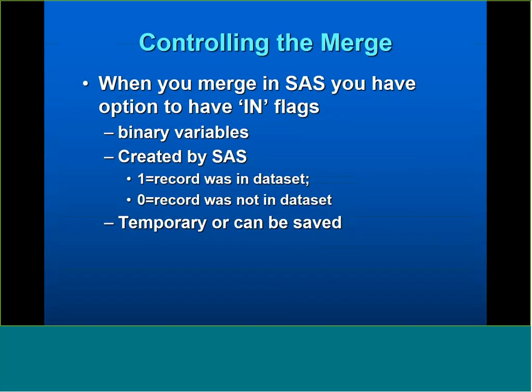What does controlling the merge mean? When you merge two data sets in SAS, you have the option of creating in-flags. In-flags are binary variables created on the new merged data set — either zero or one. A flag is one if that record was in the particular data set the in-flag was created for, and zero if it was not. With these in-flags you can control which rows of data are merged together. They can be temporary or saved; I usually just use them to control the merge and then discard them.